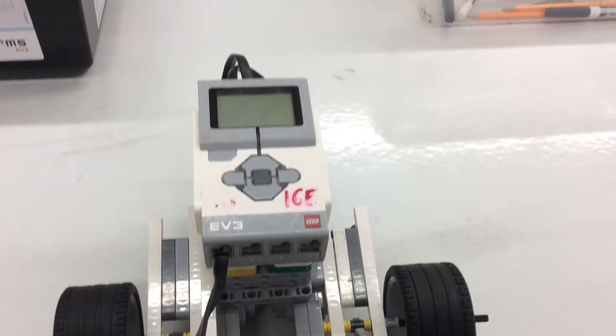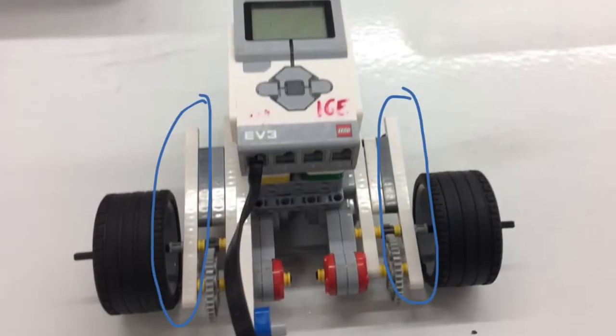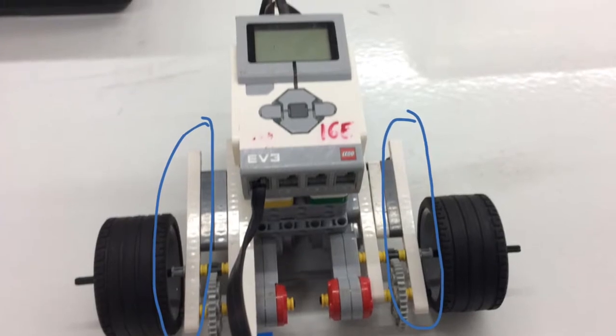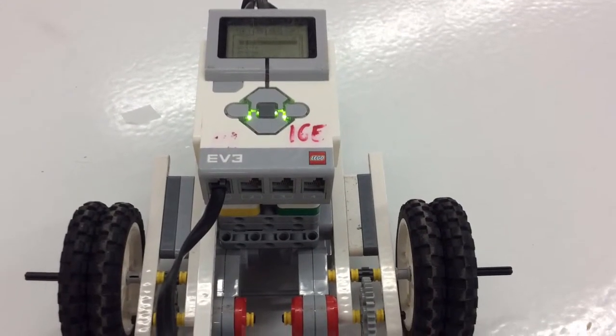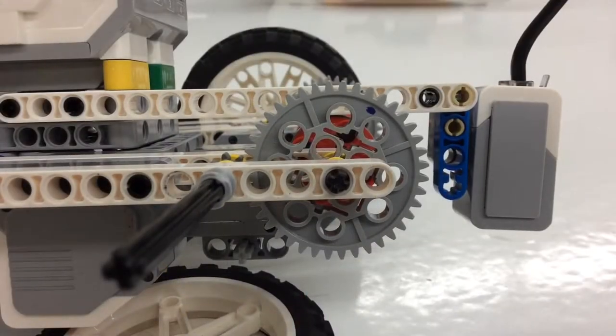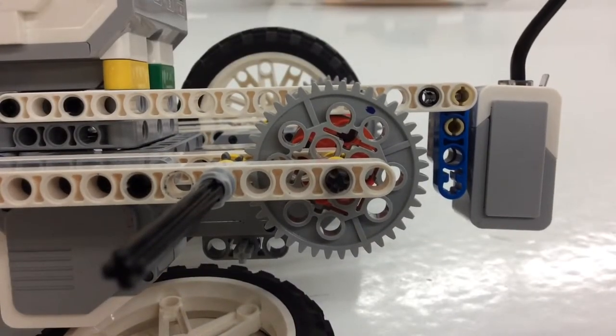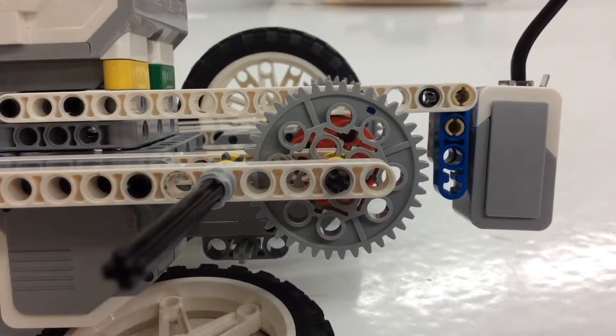So this is the robot that we had at first, and then we added these braces. And then the last thing we did was add these wheels because they were bigger.